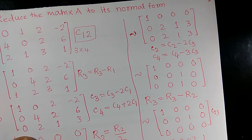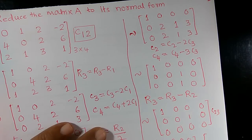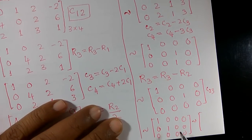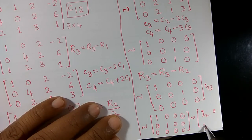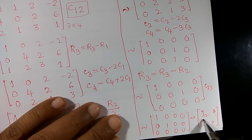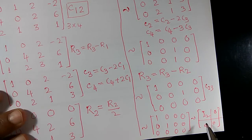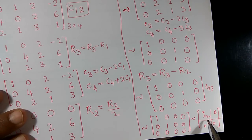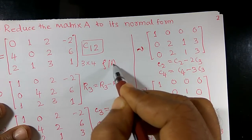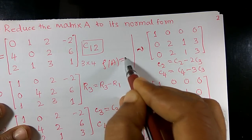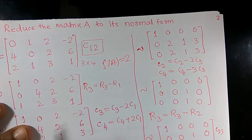This is equivalent to the normal form of order 2. It can be written as I₂ with zeros, meaning the rank of the given matrix is 2. Therefore, rank of A = 2.